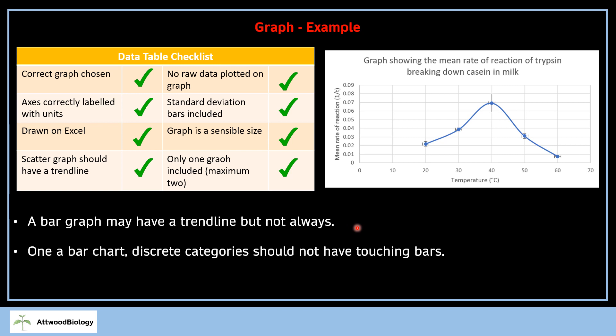The vast majority of IAs only need one graph. Sometimes there might be a reason for two, but I don't think you need any more than two graphs in your IA. Don't give me pages and pages with six graphs on each page—we don't need it. As an addition, a bar graph might also have a trend line, but it doesn't have to. On bar charts, discrete categories shouldn't have touching bars. If the categories are color or a genre of music, they're discrete—the bars aren't allowed to touch.